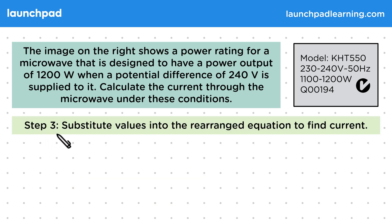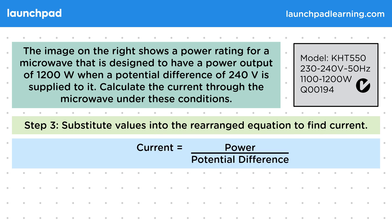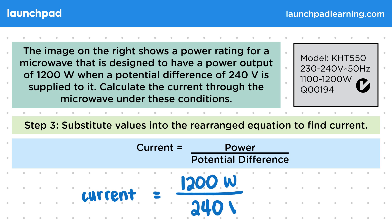For step three, let's substitute the values into the rearranged equation to find the current. Current is equal to 1200 watts divided by 240 volts, which gives us 5 amps of current running through the microwave.